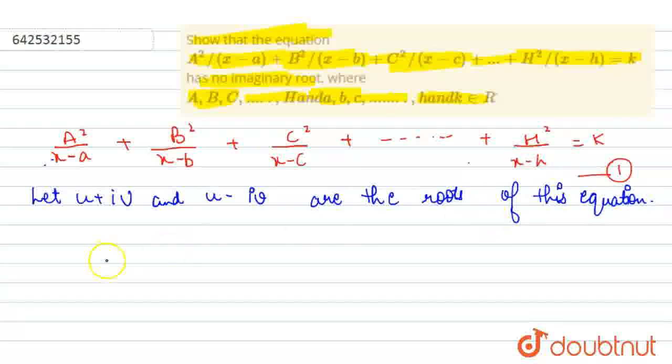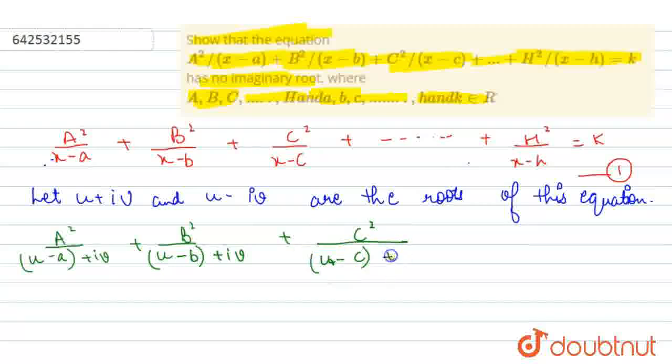These are the roots of this equation. So we can say that a² upon—firstly we put x equals to u + ib. So, a² / (u - a + ib) + b² / (u - b + ib) + c² / (u - c + ib) + up to h² / (u - h + ib) = k. This is our second equation.